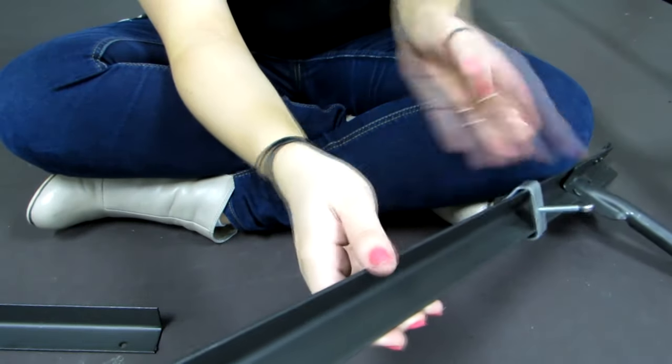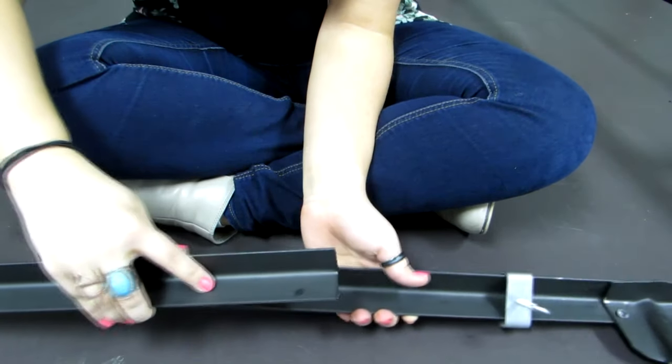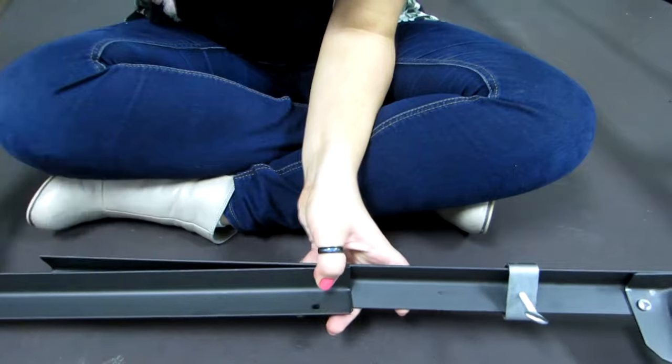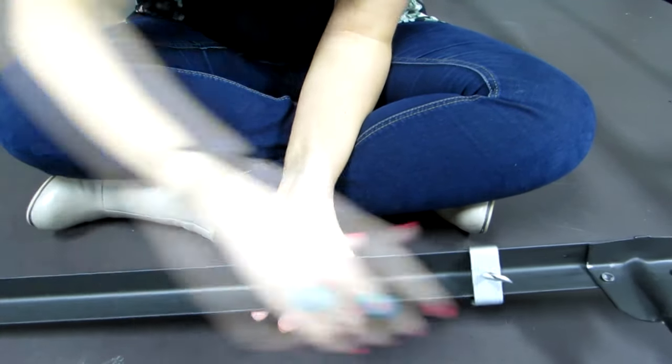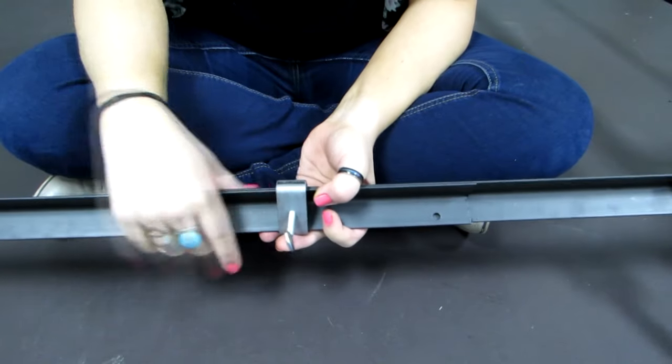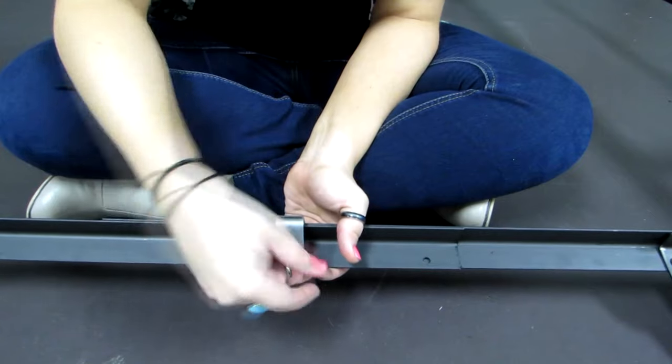So you're going to slide that out of the way. Take your piece that you need to connect it to. Slide it to where you need it. Slide the C-clamp over both pieces and use that screw to tighten them together.